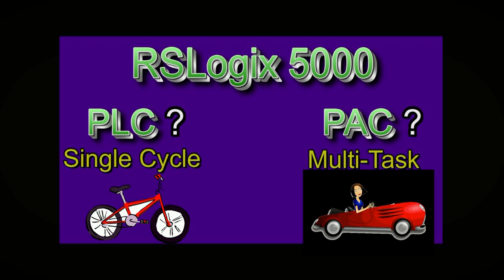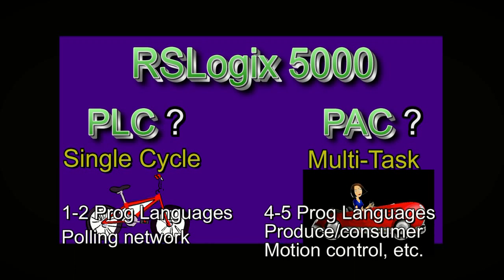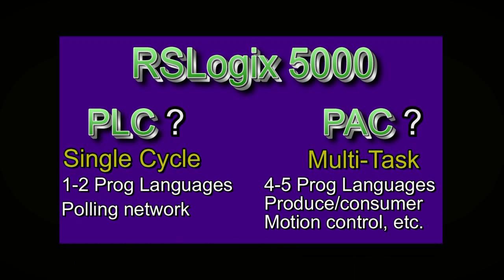A PLC typically has one to two programming languages; a PAC has four to five. A PLC is restricted to polling a network and backplane in between scan cycles. With a PAC, every module is a device on the Ethernet network.